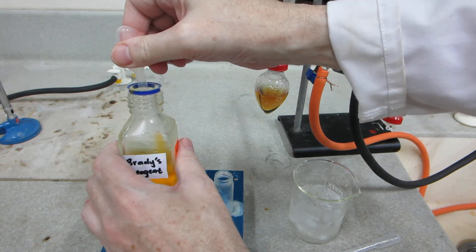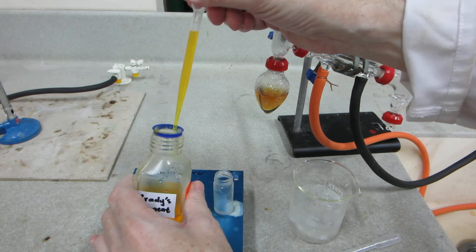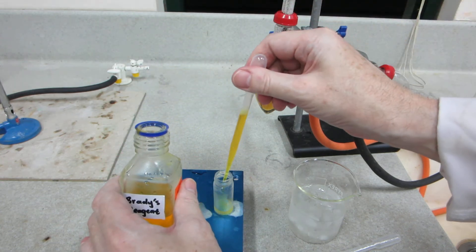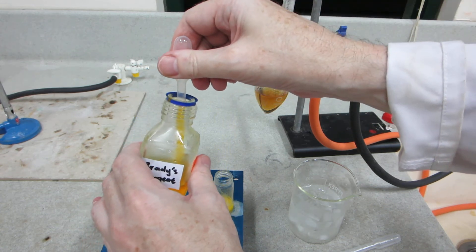We need two pipette fulls of this variant. There we are, that's 2.5 mils, and here's the second pipette measure.